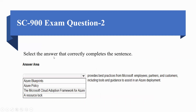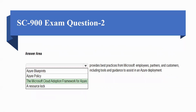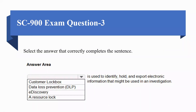Moving towards the next question: select the answer that correctly completes the sentence. The options are: Azure Blueprints, Azure Policy, Microsoft Cloud Adoption Framework for Azure, or a resource log. Which option provides best practices from Microsoft employees, partners, and customers including tools and guidance to assist in an Azure deployment? The correct option is C, Microsoft Cloud Adoption Framework for Azure.